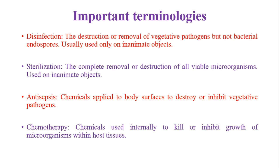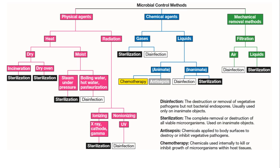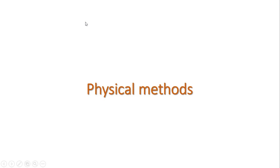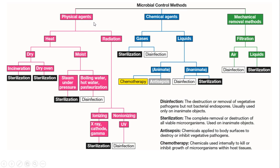Chemotherapy refers to chemicals used internally to kill or inhibit growth of microorganisms within the host, like how we use antibiotics. This is the classification of different types of sterilization and disinfection methods. Microbial control can be done by three basic principles: physical methods, chemical methods, and mechanical removal methods.